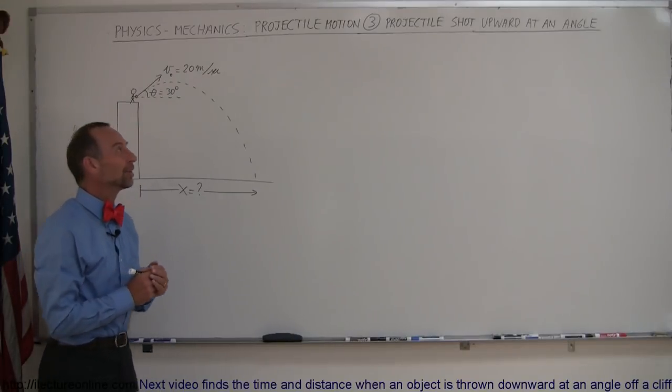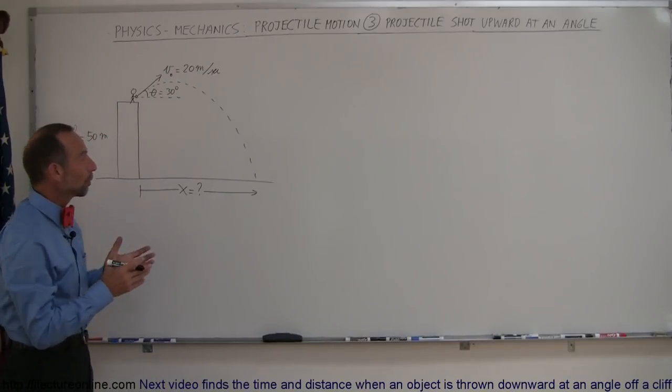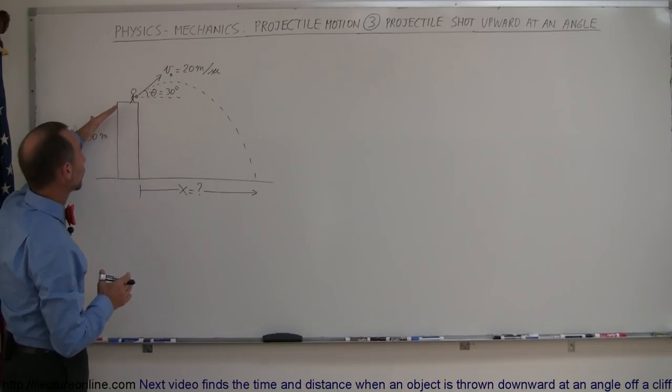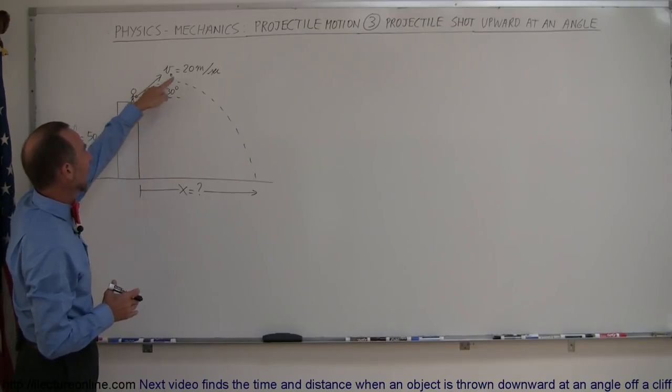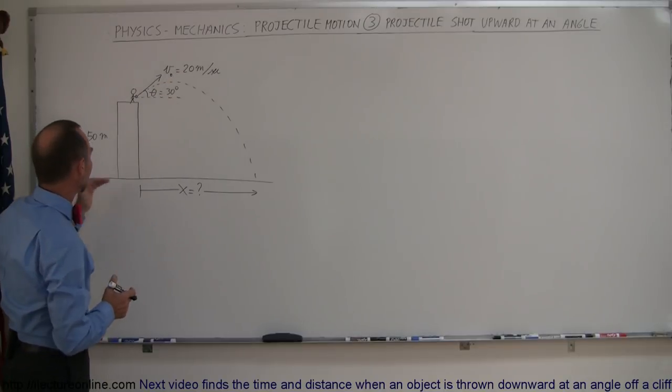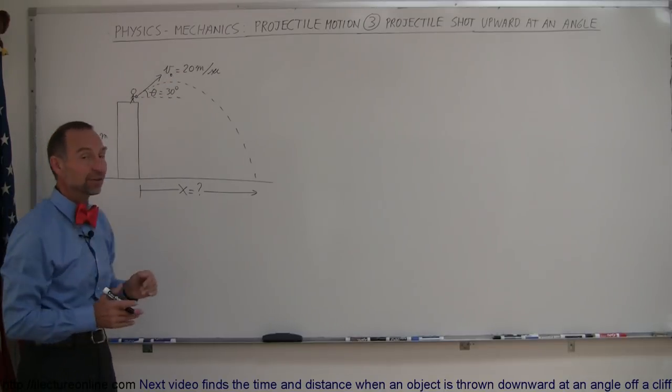In our next example we're going to take an added component to our problem where we're going to shoot the projectile upward at an angle of 30 degrees with the horizontal at initial velocity 20 meters per second, still from an initial height of 50 meters.